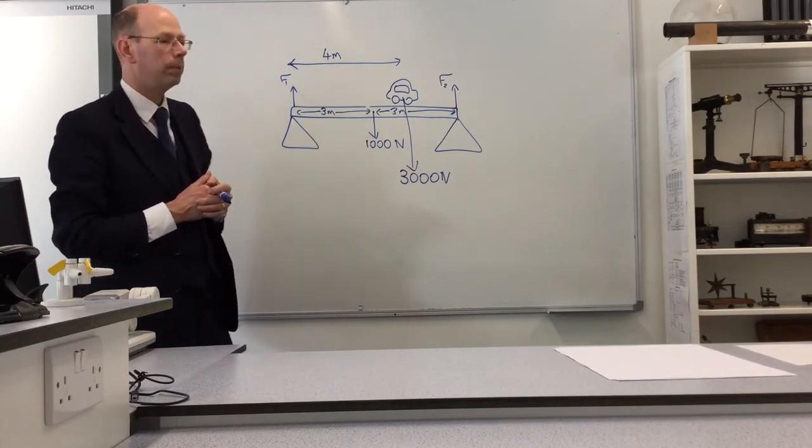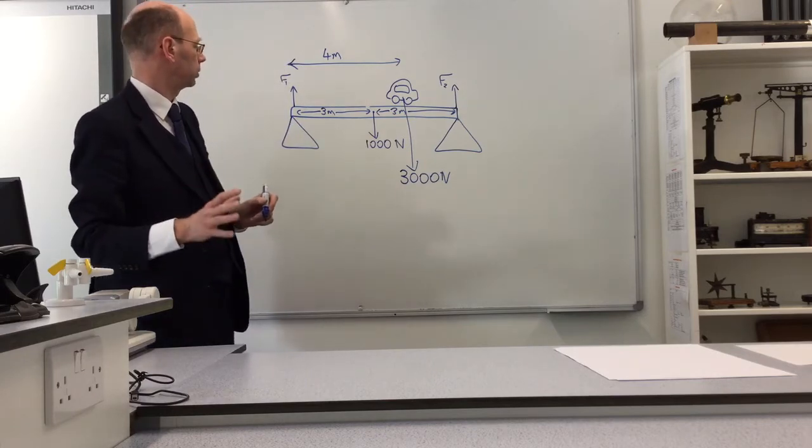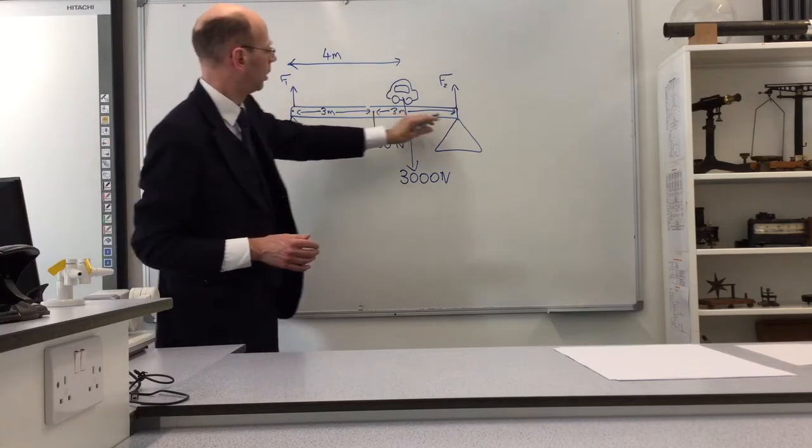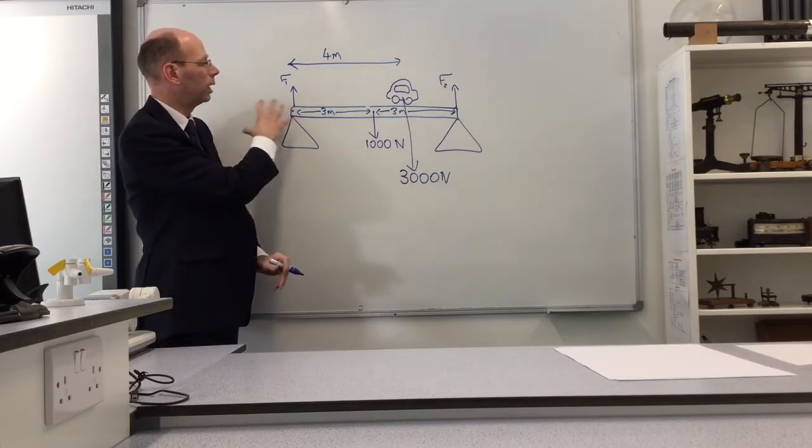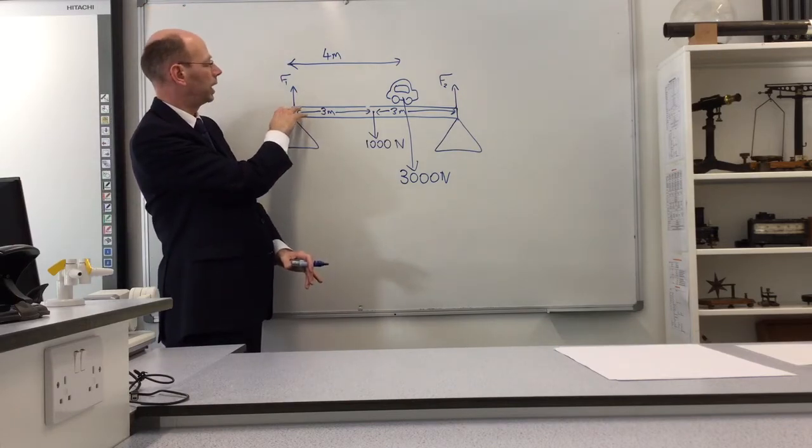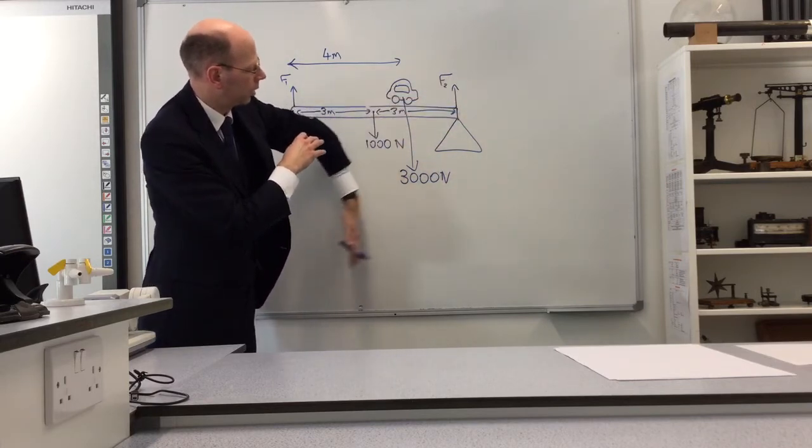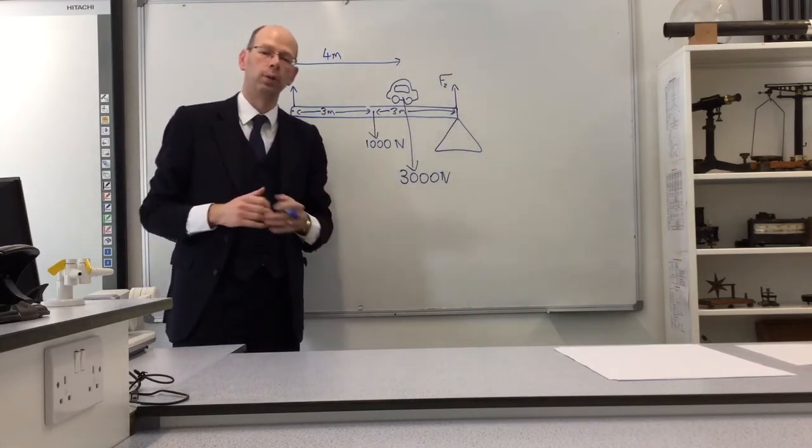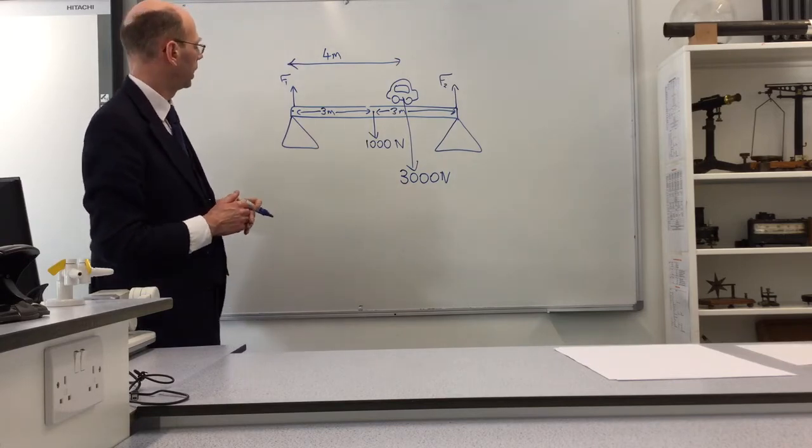How are we going to do that? We're going to apply the principle of moments again. But this time, we're going to use a little trick. We're going to take the moments around either end of the bridge. In fact, we really only need to do it for this end of the bridge. We're going to concentrate on this end of the bridge. And we can imagine, if you like, that the bridge is pivoted with a pivot here. And there are some forces which are going to try and turn the bridge clockwise, and there are forces which are going to turn it anti-clockwise. And each of those forces creates a moment, and those moments have to be balanced.